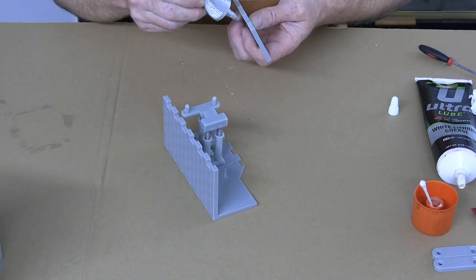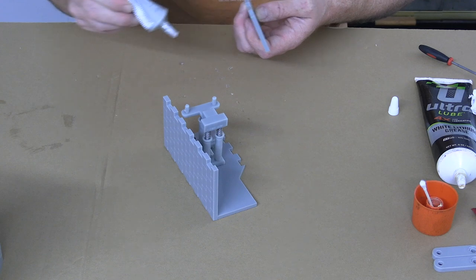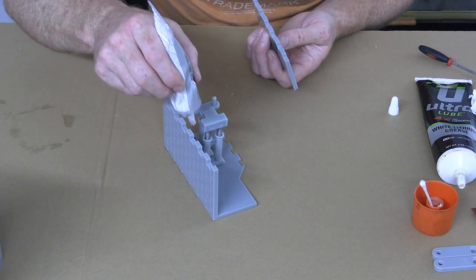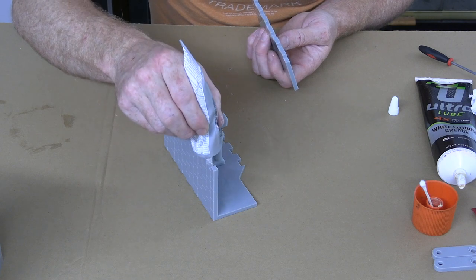Once that is all snapped together nice and snugly, we're going to repeat the process for the other side, making sure again to try to keep all the glue on the inside sections so that it does not bubble out.